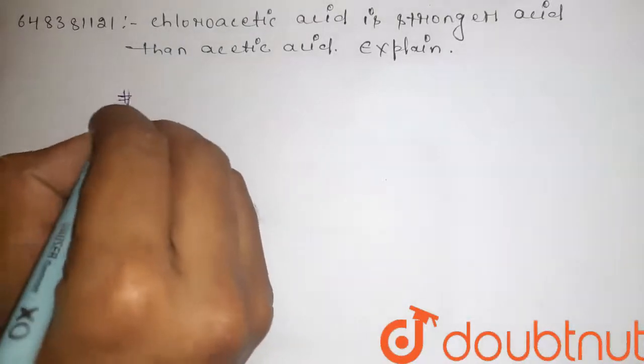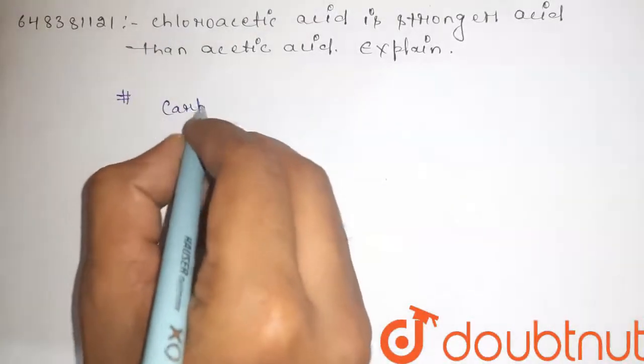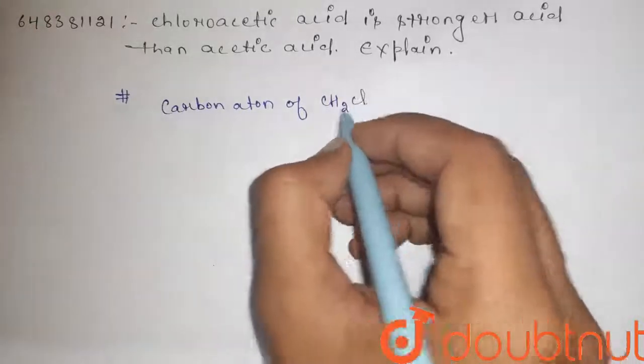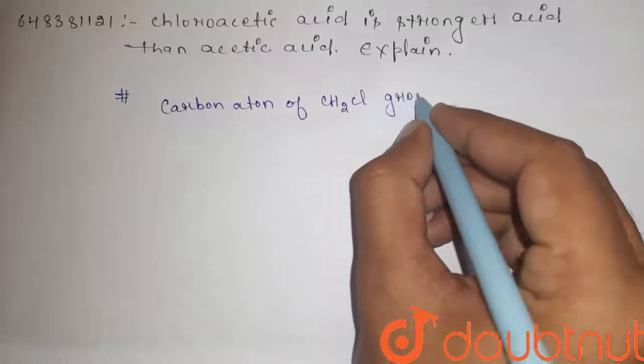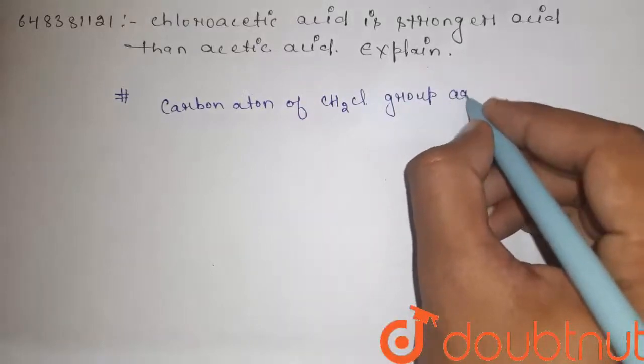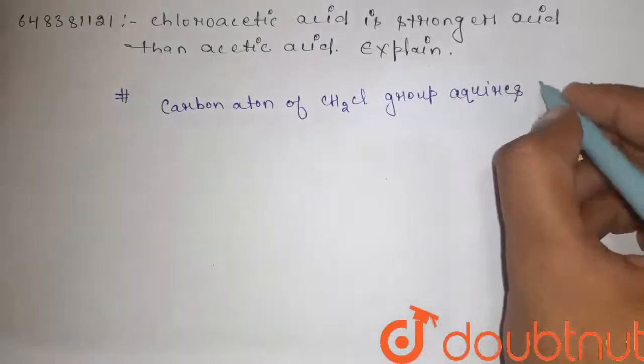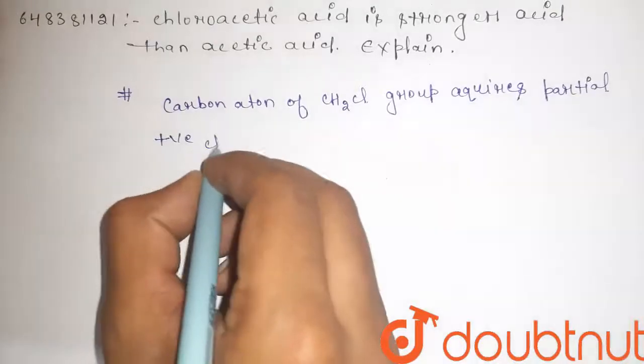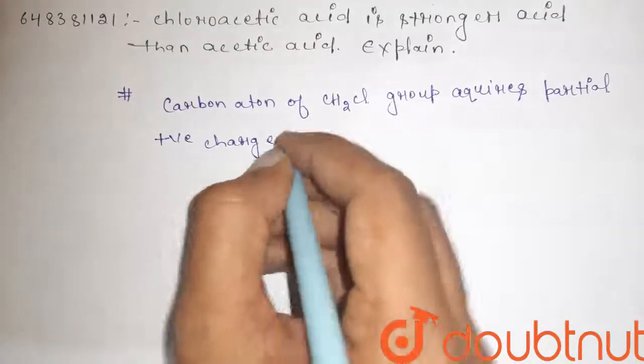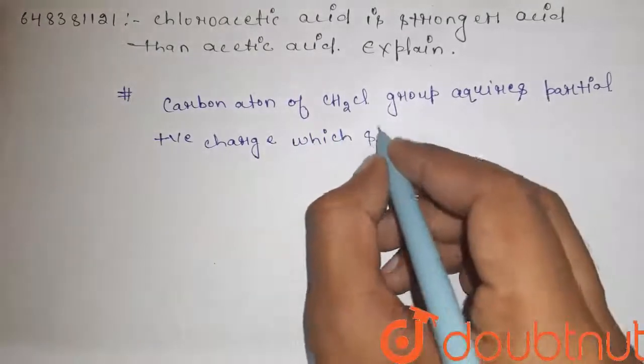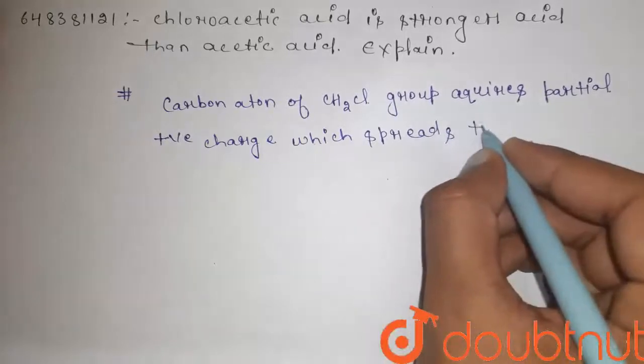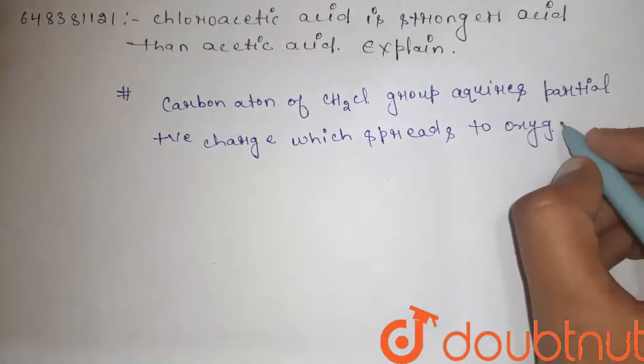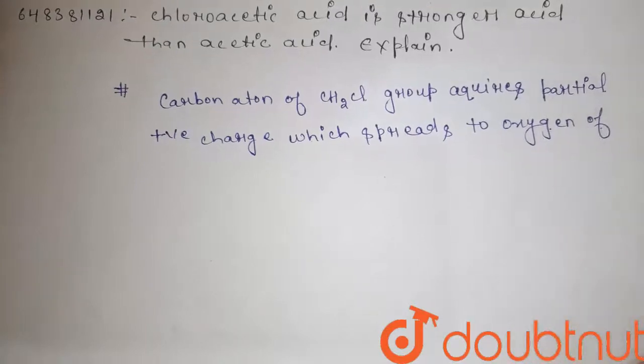So guys, this explanation is the carbon atom of CH2Cl group acquires partial positive charge which spreads to oxygen of chloroacetate.